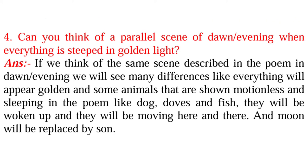The fourth question is: can you think of a parallel scene of dawn or evening when everything is steeped in golden light? If we think of the same scene described in the poem at dawn or evening, we will see many differences. Everything will appear golden, and some animals shown as motionless and sleeping in the poem — like the dog, dove, and fish — will be woken up and moving. The moon will be replaced by the sun.